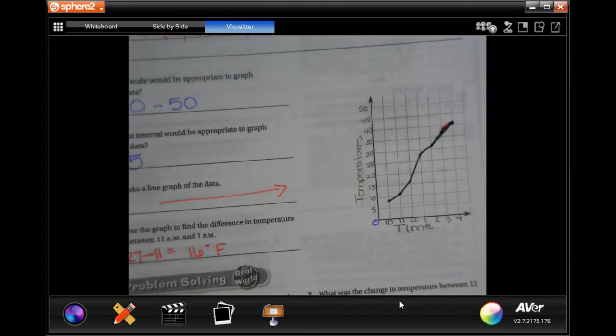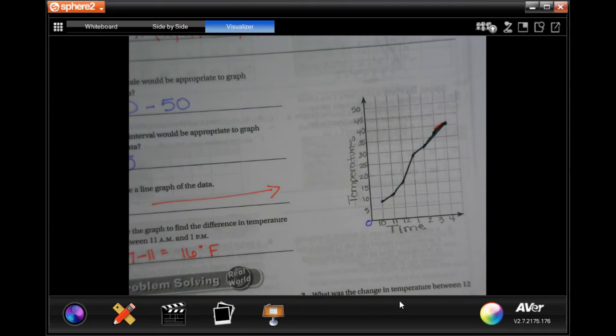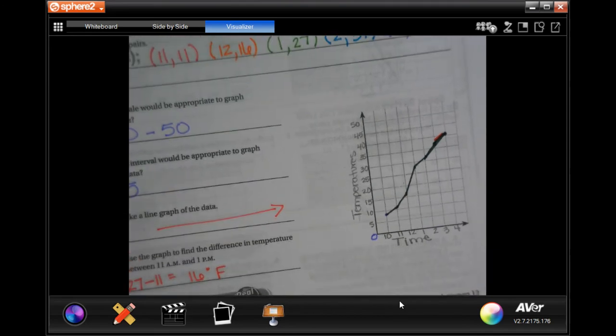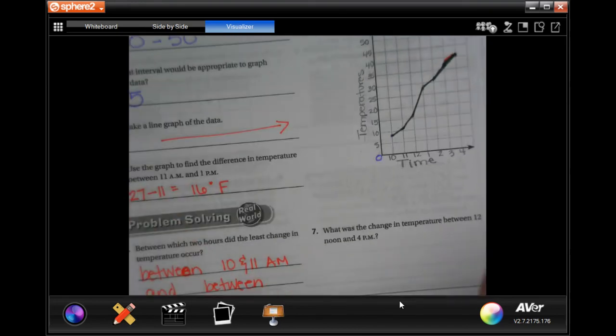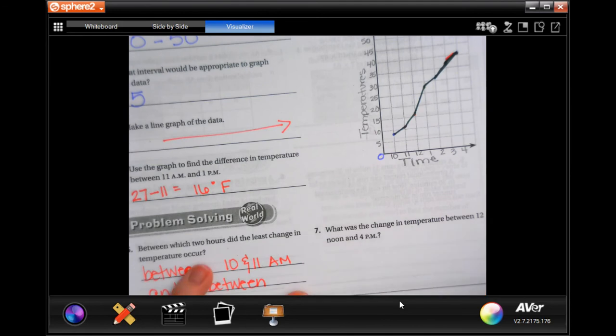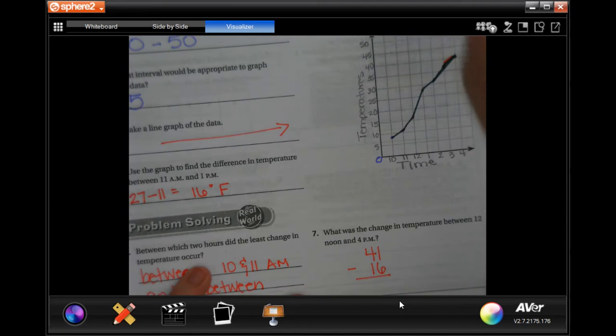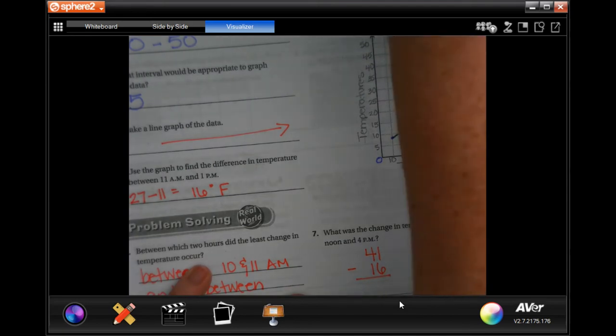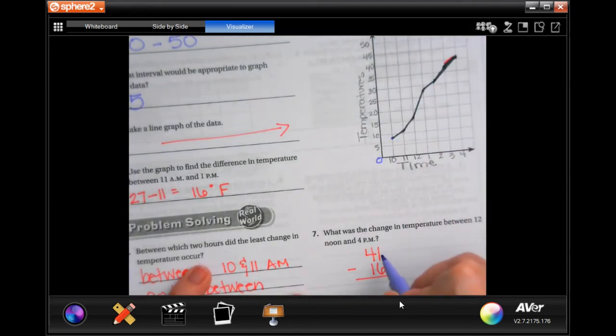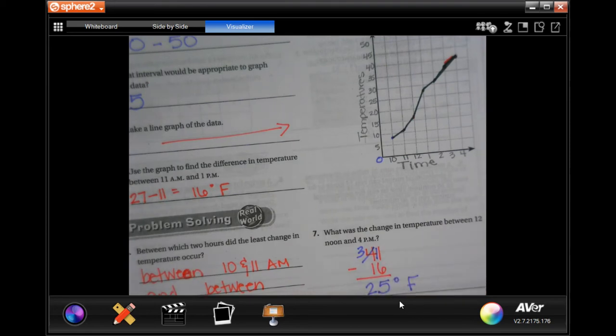What was the change in temperature between 12 noon and 4 p.m.? So we're finding the difference. 4 p.m. was 41, 12 noon was 16. So 41 minus 16. Let's do it. 1 can't take away 6, so I'm going to borrow 1. So 11 take away 6 is 5, 3 take away 1 is 2. 25 degrees Fahrenheit.